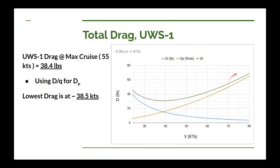Getting back to the drag profile from the title chart: I've taken the induced drag (the blue line), the parasitic drag (the gold line), and added them together to get the total drag (the green line). The drag at maximum cruise — 55 knots — looks like it's about 38.4 pounds, and the lowest drag point seems to be right around 38.5 knots. I've also twiddled with the numbers for a heavier pilot or baggage, which tends to move the lowest drag point up around 40–41 knots. This 38.4 pounds at maximum cruise has to be matched by 38.4 pounds of thrust, which I can convert into the horsepower — or in our case watts for electric motors — needed to select the right motors.